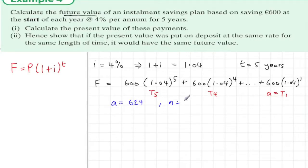There are 5 terms so n = 5, and the common ratio r = 1.04. So we use the sum of a geometric series formula to sum this up. So S_n = a(1-r^n)/(1-r).